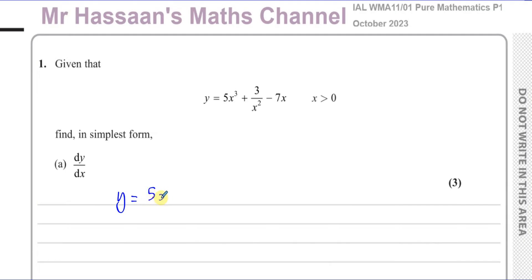So we have 5x cubed. Now this is going to be written as 3 times x to the power of negative 2, using the law of indices that 1 over something to the power of something can be written as a negative power. So you have a to the power of negative n is 1 over a to the power of n, reciprocal. That's from the laws of indices. And then you've got minus 7x.